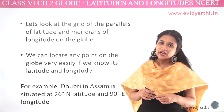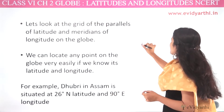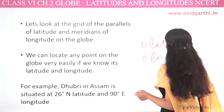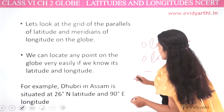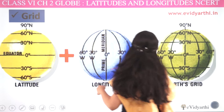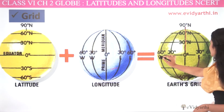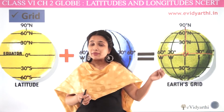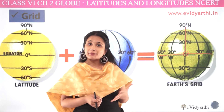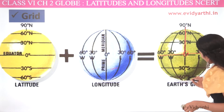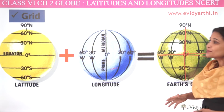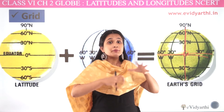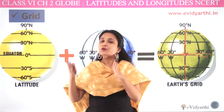But how do we find out? For instance, I want 0° latitude and 0° longitude. So what do we do here? Let's look at this globe on a 2D surface.